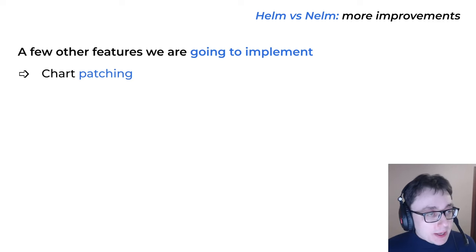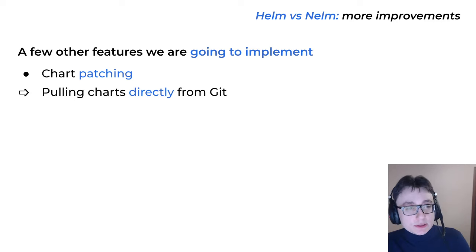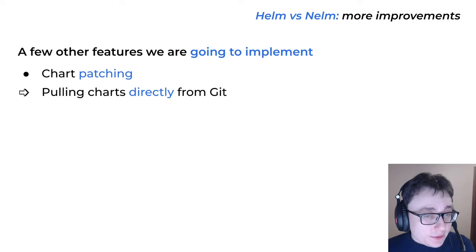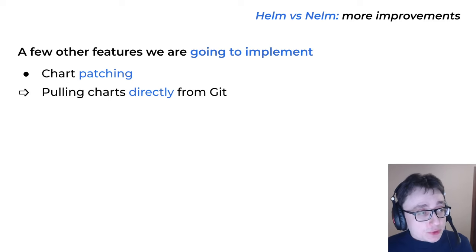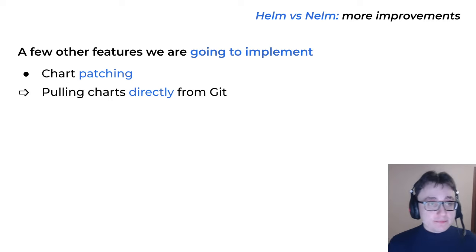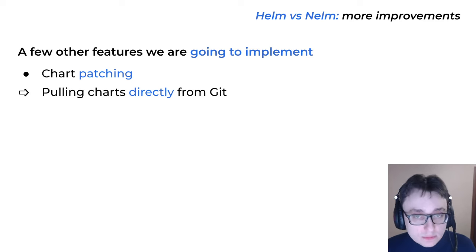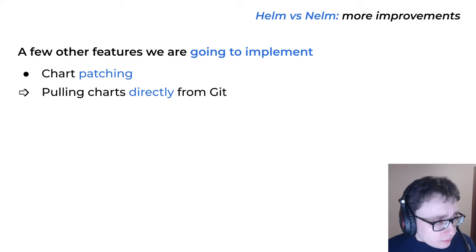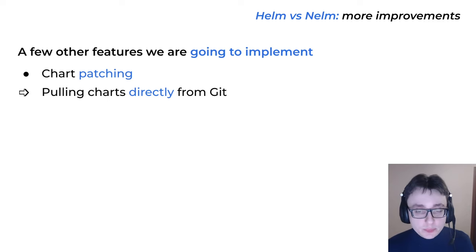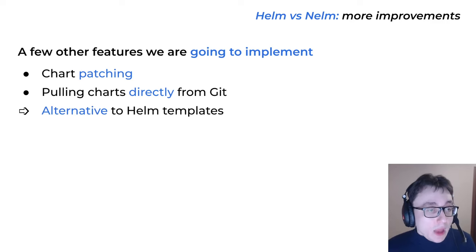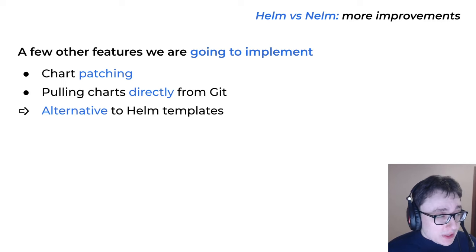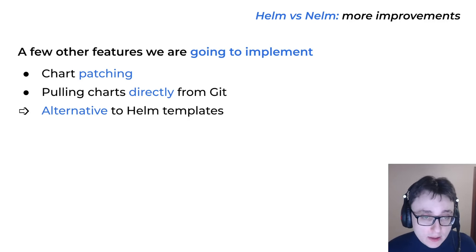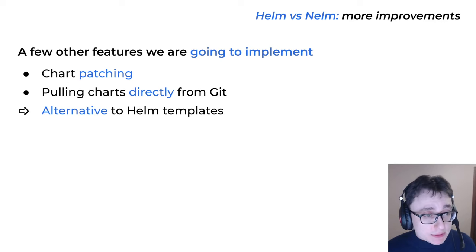We also want to add the ability to pull charts directly from Git, including dependent charts, straight into the Nelm/Werf core. There are a few Helm plugins to do that, but we think it would be very useful out of the box — most of the time you don't really need a Helm chart repository, so why not just pull it from Git? Additionally, we would like to add some alternative to Helm templates. We still need to figure out what that should be — maybe a special language like CUE, or maybe a general purpose language like TypeScript. We haven't decided yet, but we will surely add something.